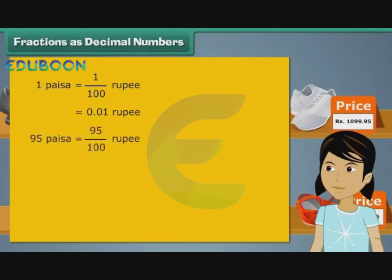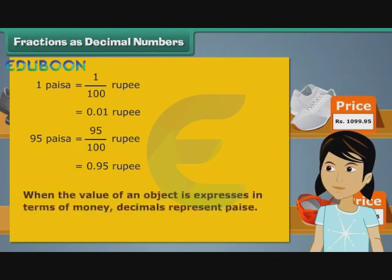Therefore, 95 paise form 95 by 100th of a rupee. We can express 95 paise as 0.95 rupee. Therefore, the decimals in the footwear prices stood for paise. When the value of an object is expressed in terms of money, the decimal represents paise.